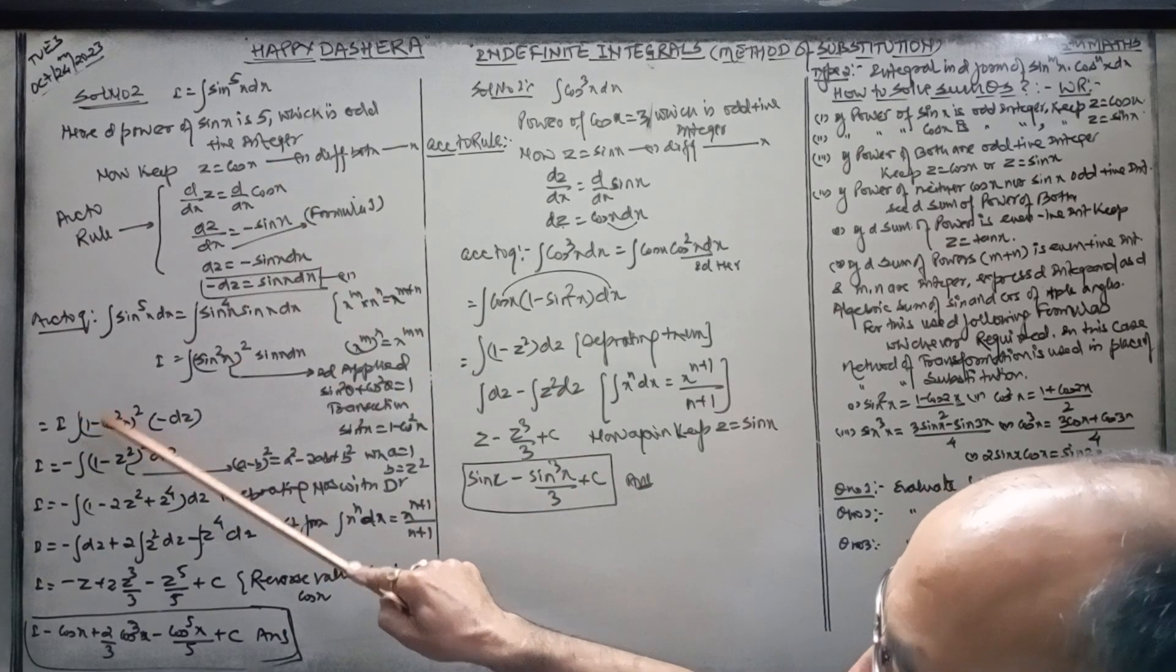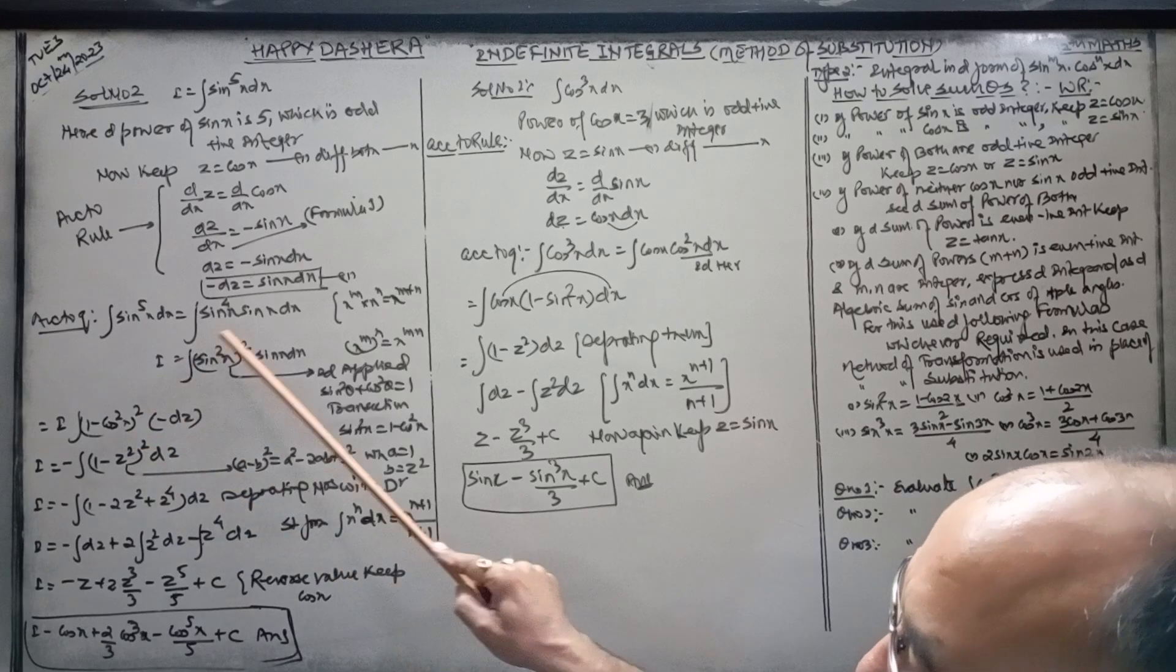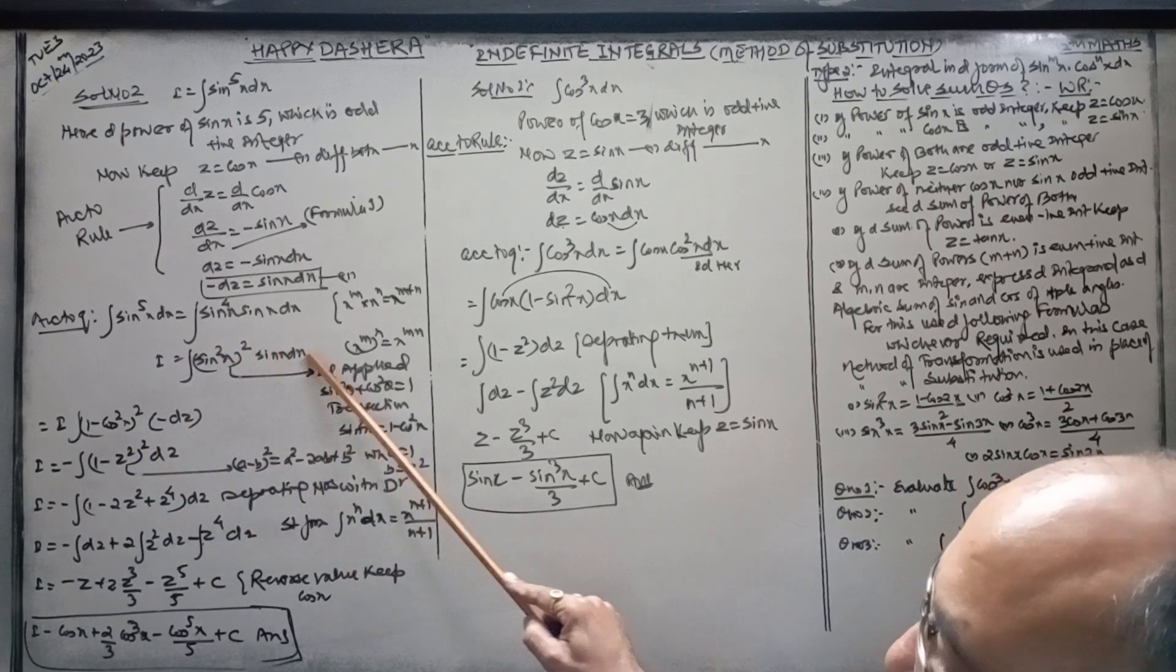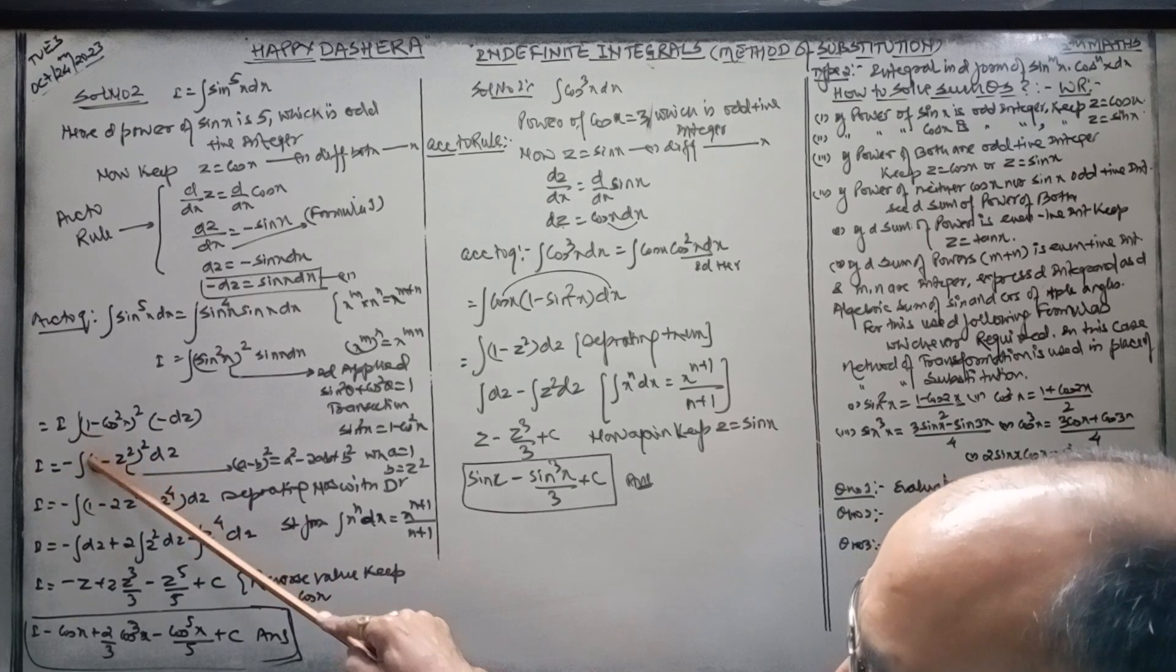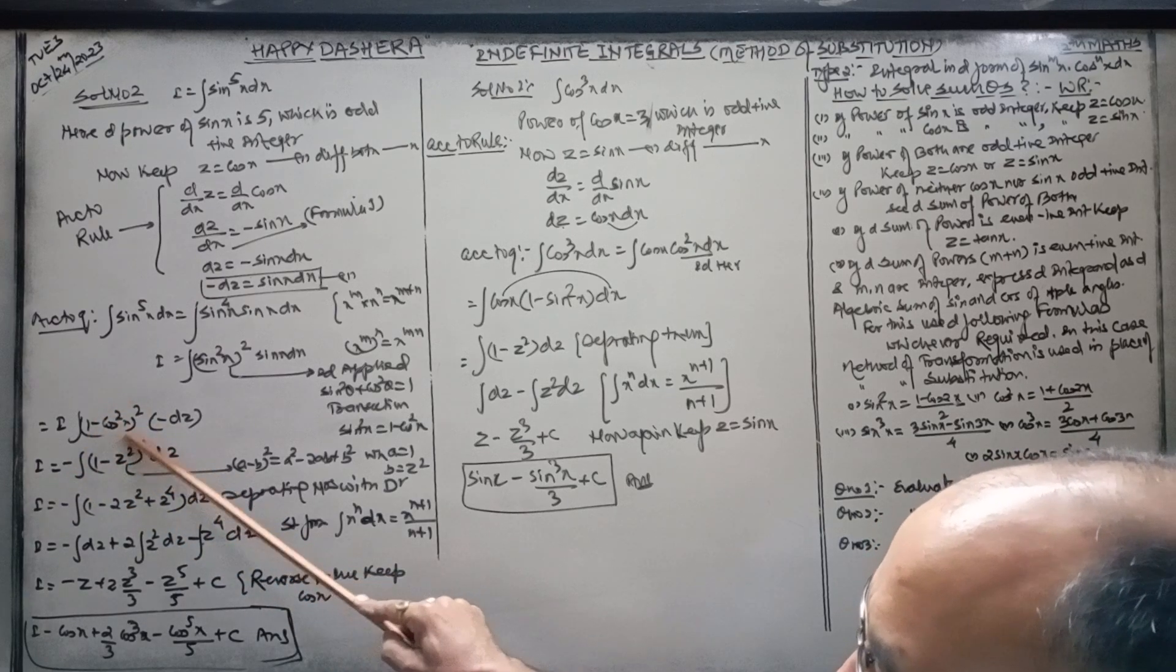1 minus cos² x to the power 2, in place of sin x dx. This minus you have to keep here. So, 1 and in place of cos x, z.